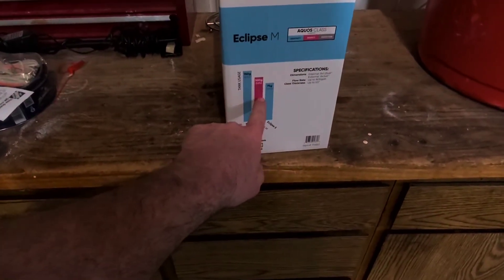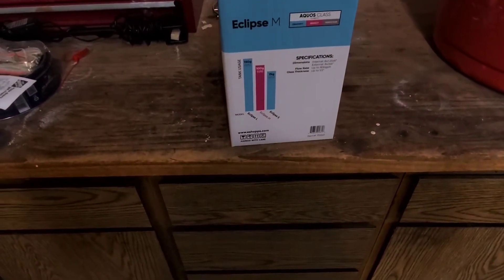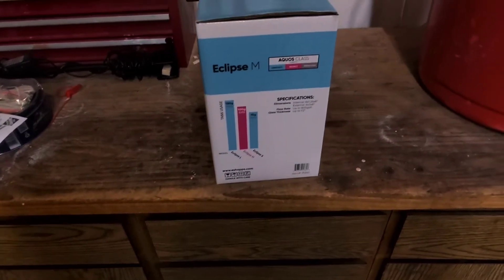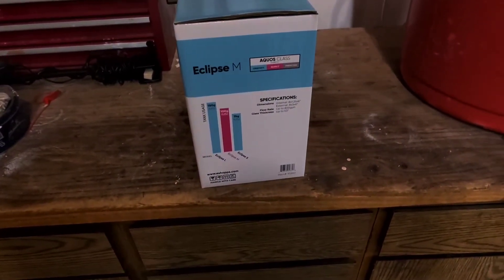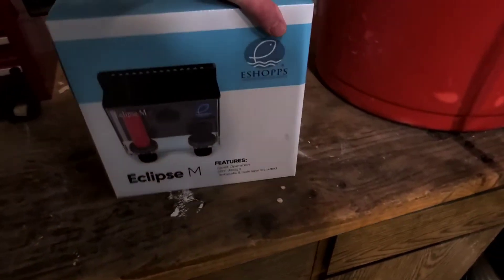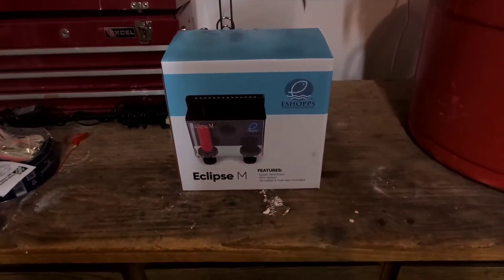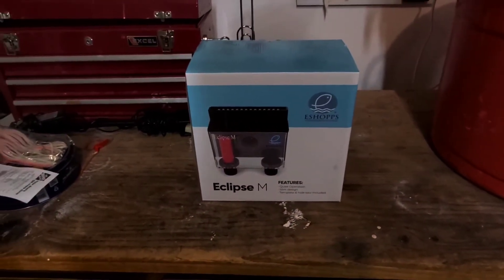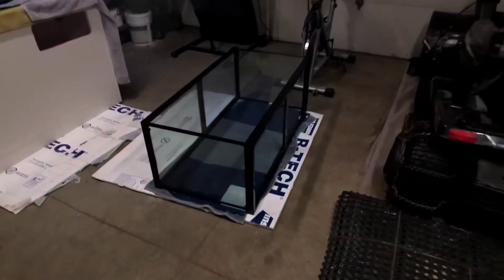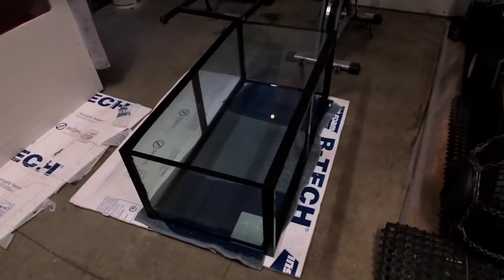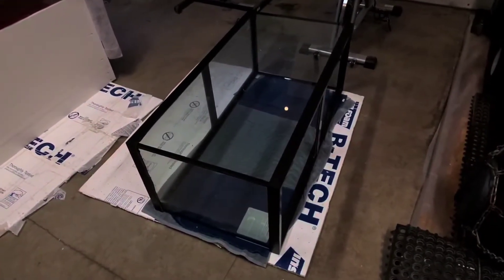It's rated up to 100 gallons, this is a 90 gallon, so we'll be fine. I don't need a whole ton of flow going through my sump anyways. I don't have a large sump so that's what we got. We're going to mark out the center for the overflow and then drill two returns.